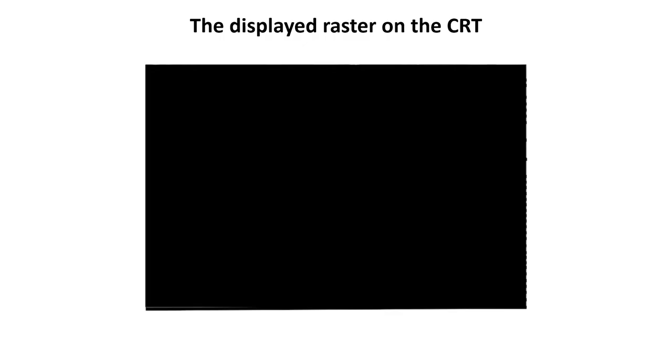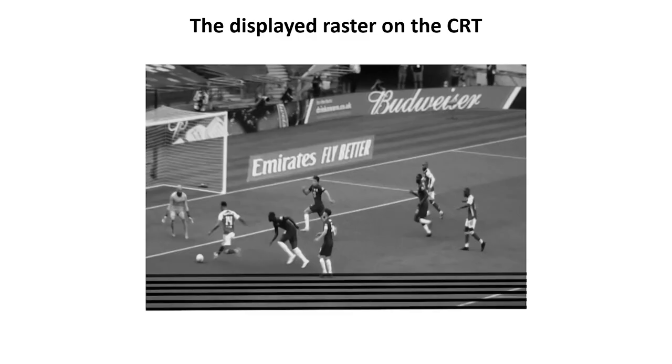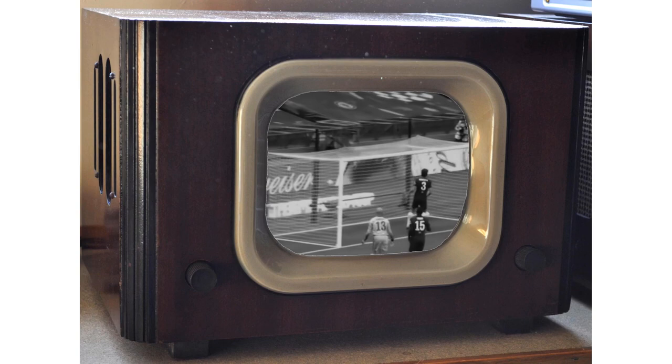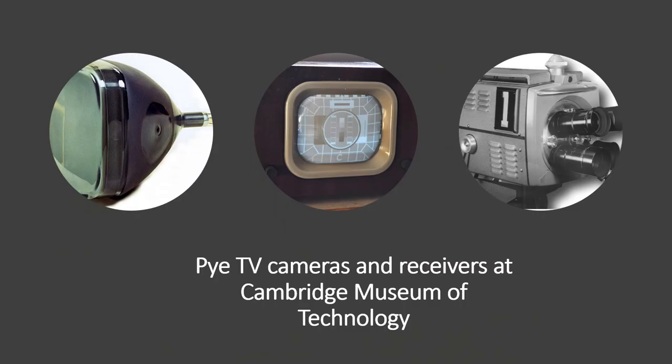In reality, there are a total of 576 displayed lines, and the complete picture frame is replaced 25 times per second, so that the eye sees the complete picture without perceiving the lines or the frame changes. To learn more about television cameras, tubes, and receivers that Pi produced, please visit Cambridge Museum of Technology.